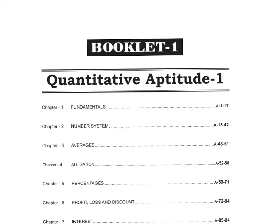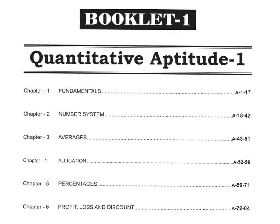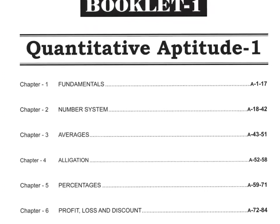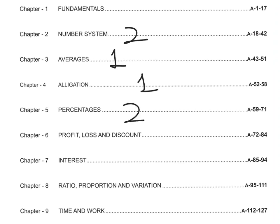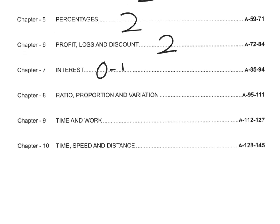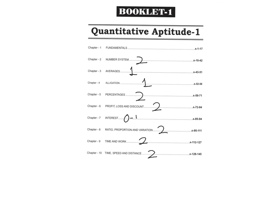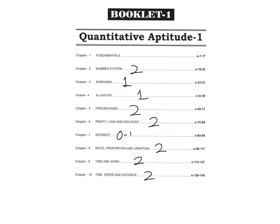Chapter 1 covers basic fundamentals — I want to start with the basics. Chapter 1 covers the number system: every year 2 questions on average, 1 on allegation, percentage 2 questions, profit and loss 2 questions, interest 0 to 1 question, ratio proportion variation 2 questions, time and work 2 questions, time and distance 2 questions. So every topic on this board is around 1 to 2 questions — that's your first target.